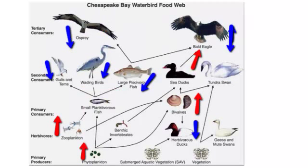If we look at these arrows, the blue represents a decrease in population while the red represents an increase in population.